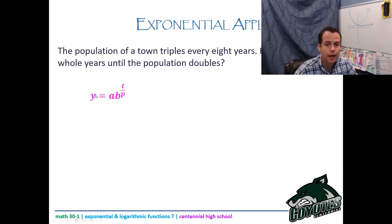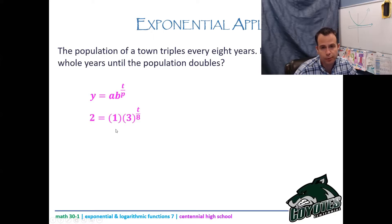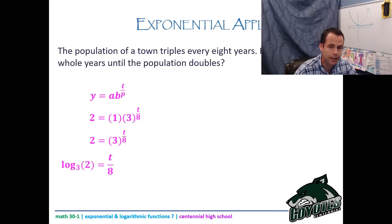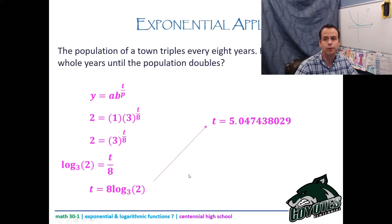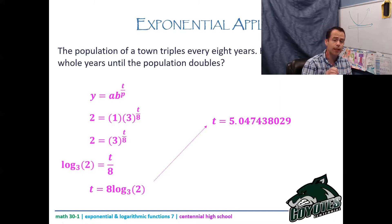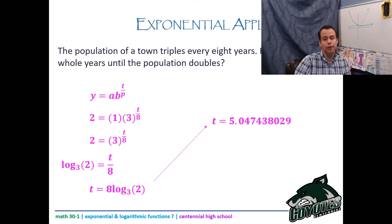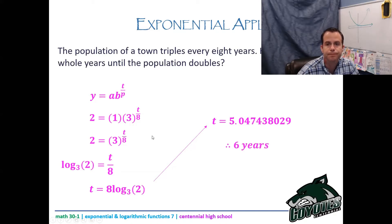So y = 2, a = 1, b = 3 (tripling), period p = 8. Dividing both sides by 1 does nothing, then switch to log form: log base 3 of 2 = t/8. Multiply both sides by 8 and you get t ≈ 5.047. Since the question asks for whole years, and 5.047 is over 5, you need 6 whole years for the population to double.